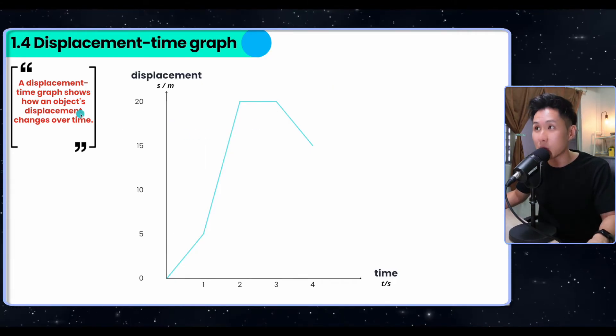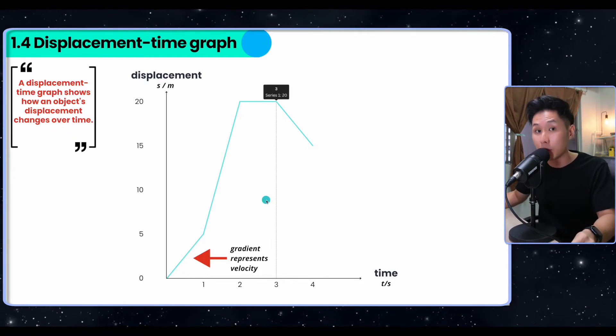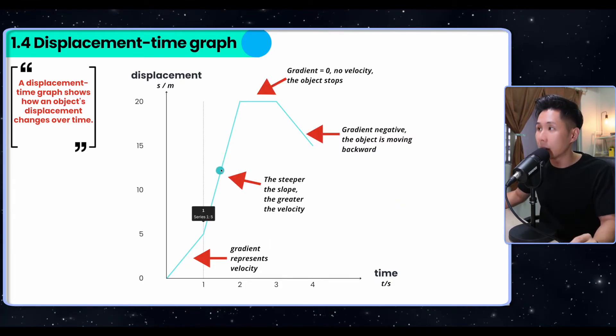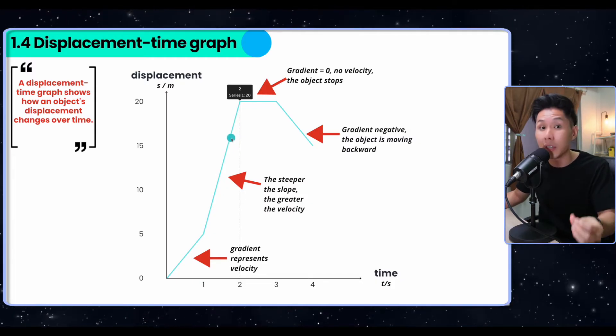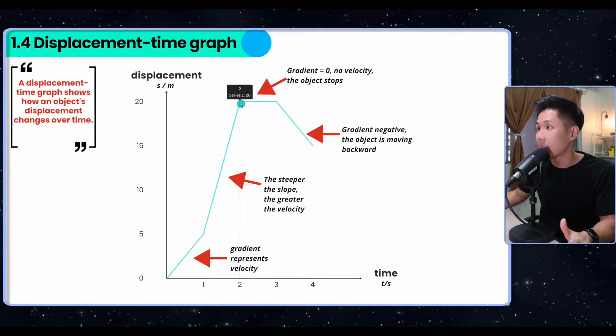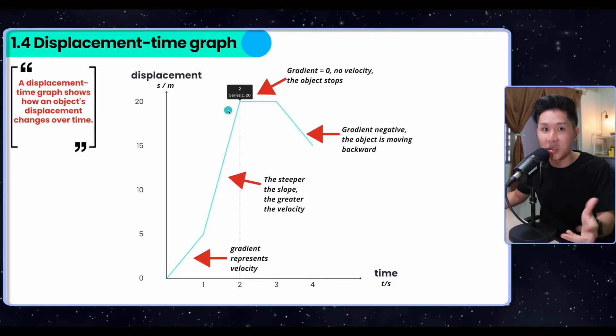Now without further ado, let's also look into the next graph called the displacement-time graph. What it shows is that it shows an object's displacement changes over time. In this graph here, gradient represents the velocity. Because of that, the part of the graph that has a higher gradient means that the object is traveling at a higher velocity. It makes sense if you look at the graph here. From one second to two seconds, the displacement changes a lot.